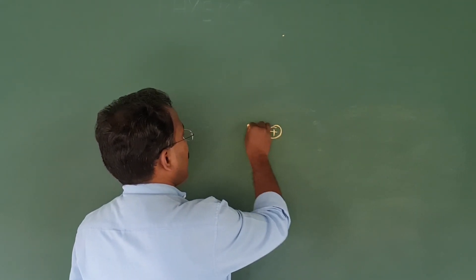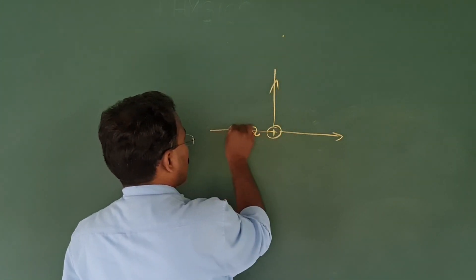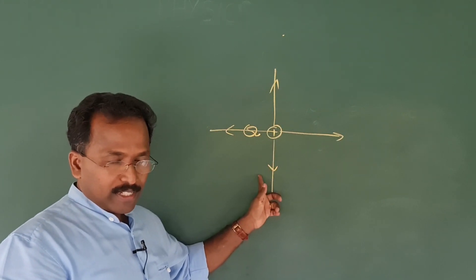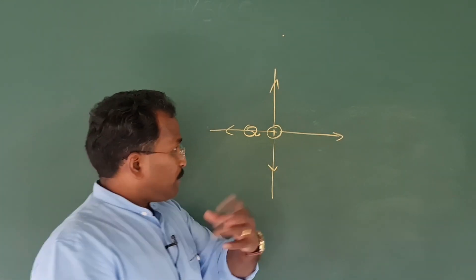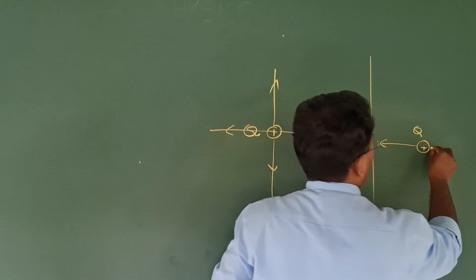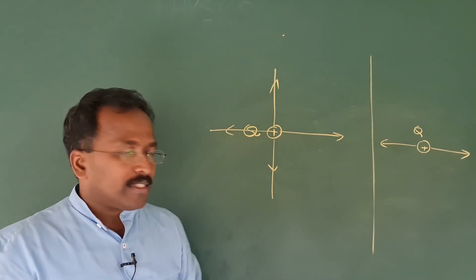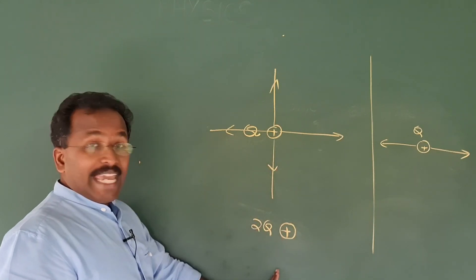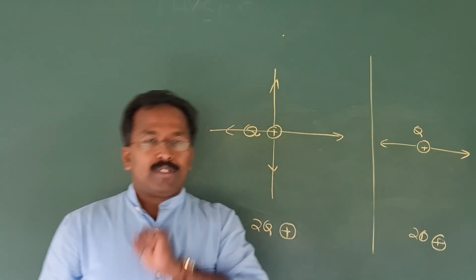Now we will draw a few electric field line situations. The first situation: I have a positive charge Q and I draw four lines around it. The logic of drawing four lines is purely a personal choice — you can draw eight lines or three lines, no problem. In the next step, if I draw electric field lines around charge 2Q, I am supposed to draw eight lines. You are supposed to draw four if you started with two. That's the rule — the number of lines must be proportional to the charge.